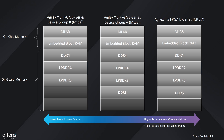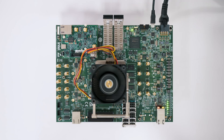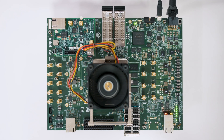All Agile X5 FPGAs include DDR4, LPDDR4, and LPDDR5 support. The Agile X5 E series Group A and D series devices also support DDR5. For this demo, we will focus on the LPDDR4 interfaces on Bank 2A and DDR4 on Bank 2B on the Agile X5 FPGA.